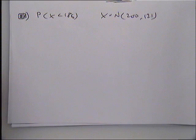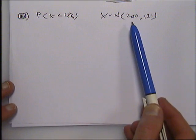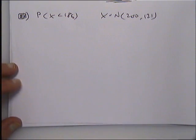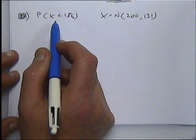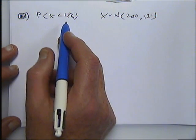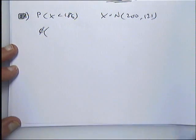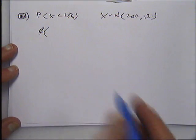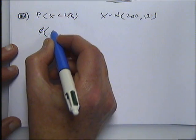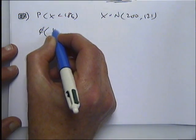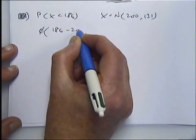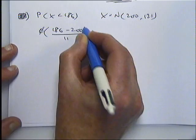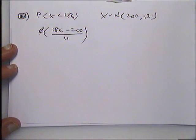For the next example, part b, the same question. We still got X is normal with mean 200 and variance 121, and we want the probability that X is less than 186. If it's less than, it's going to be phi of something.